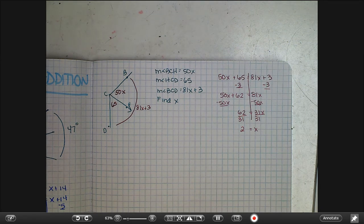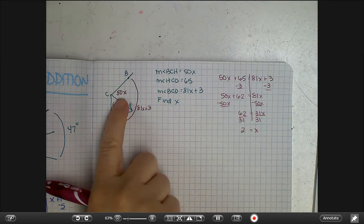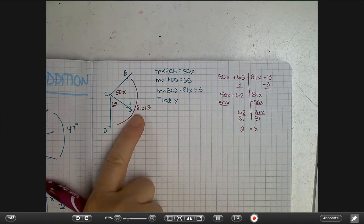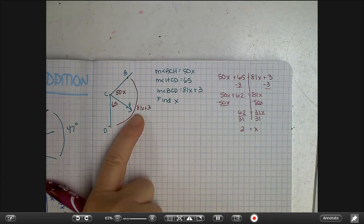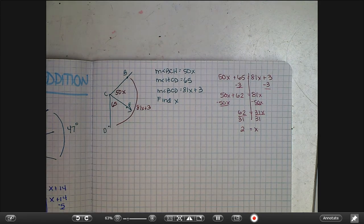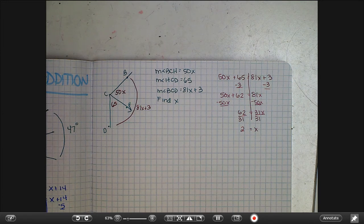So x equals 2. And if we wanted to find the measure of this angle we would substitute that in: 100. If we wanted to find this one we would substitute that in, which would be 162 plus 3, which would be the same. So that is how you do that kind of a problem. And again, we might have a special case problem where we use bisects.